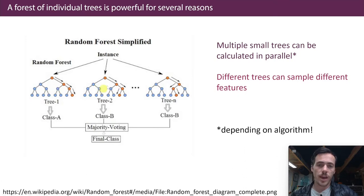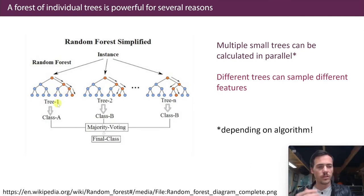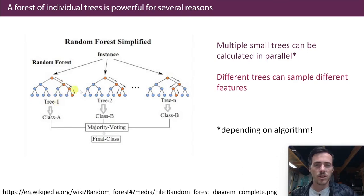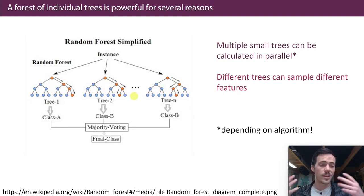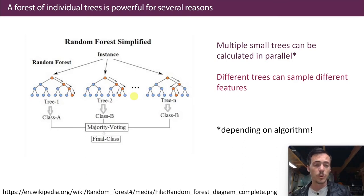For example, you build N number of trees — it could be a hundred or a thousand or whatever you want. You build these trees, then you send your data through and you ask: what does tree number one think the outcome is — the yield strength or the classification category? What does tree number two, all the way up to tree number N think? Then you just average things together if it's a regression, or you do majority voting if it's a classification. By taking the wisdom of a hundred trees, which are all slightly different, you end up with a way to predict properties using many weak learners.